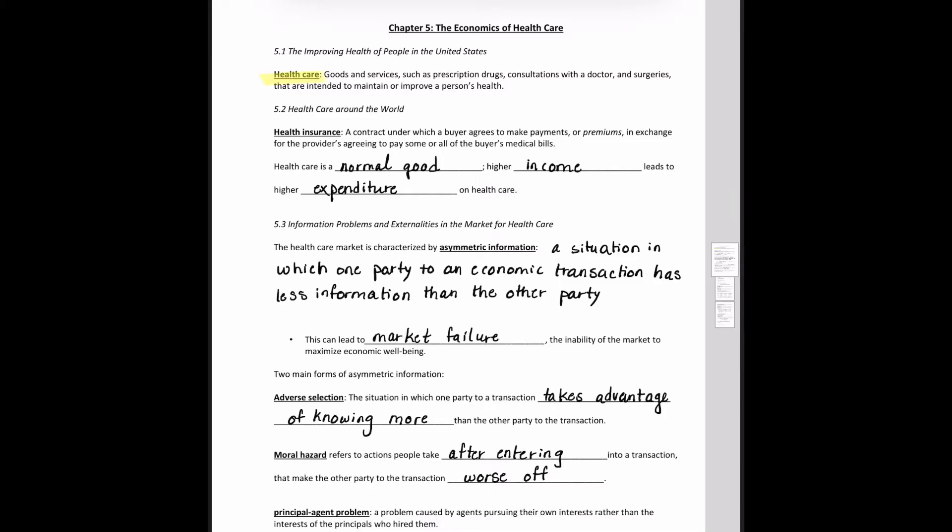So, let's talk about information problems and externalities in the market for healthcare. And this actually applies to all different types of markets, not just healthcare. Healthcare market as well as some other markets can be characterized by asymmetric information, which is a situation in which one party to an economic transaction has less information than the other party. This can lead to market failure, the inability of the market to maximize economic well-being. There are two main forms of asymmetric information, adverse selection and moral hazard. So, our two main forms down here, adverse selection and moral hazard. Adverse selection is the situation in which one party to a transaction takes advantage of knowing more than the other party. And moral hazard is the actions people take after entering into a transaction that make the other party to the transaction worse off.